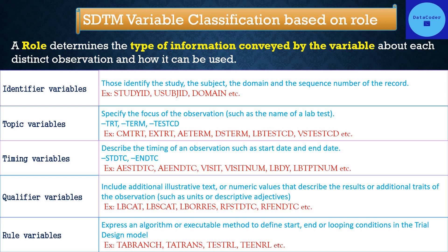Qualifier variables include additional illustrative text or numeric values that describe the result or additional traits of the observation, such as units or descriptive adjectives. Examples are LBCAT, LBSUBCAT, LBORRES, RFSTTDTC, and RFENDTC. Qualifier variables are further subcategorized into five classes.